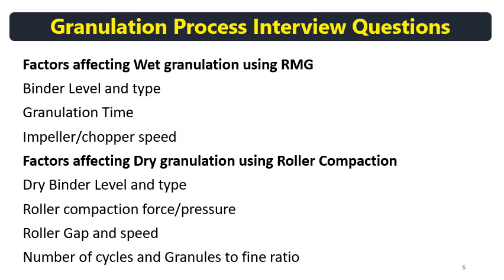Factors affecting dry granulation using roller compaction: dry binder level and its type, roller compaction force or roll pressure, roller gap and speed, number of cycles, and the granules-to-fines ratio. Mill speed and mill screen also affect the granules-to-fines ratio and thus impact the dry granulation process.